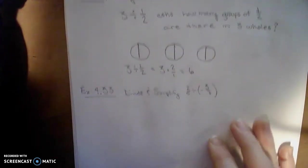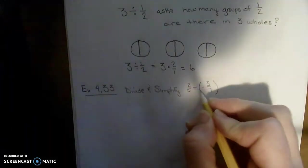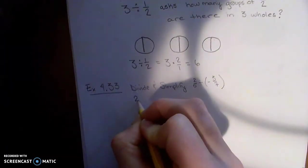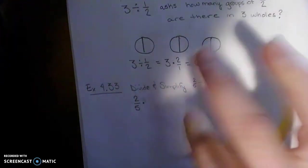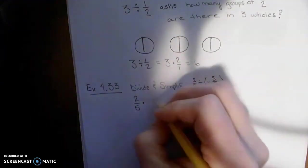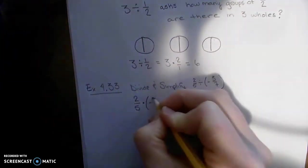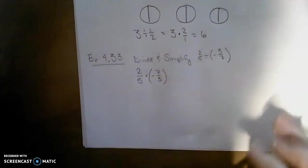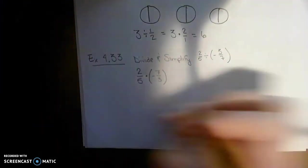All right, let's do another example now where we divide and simplify these fractions. 2 fifths divided by negative 3 sevenths. Again, our procedure keeps the first number the same. Instead of divide, we'll multiply it by the reciprocal of this number. So the reciprocal of negative 3 sevenths is negative, flip it, 7 over 3. And now it's just back to what we did with multiplication. How do you multiply these fractions together?